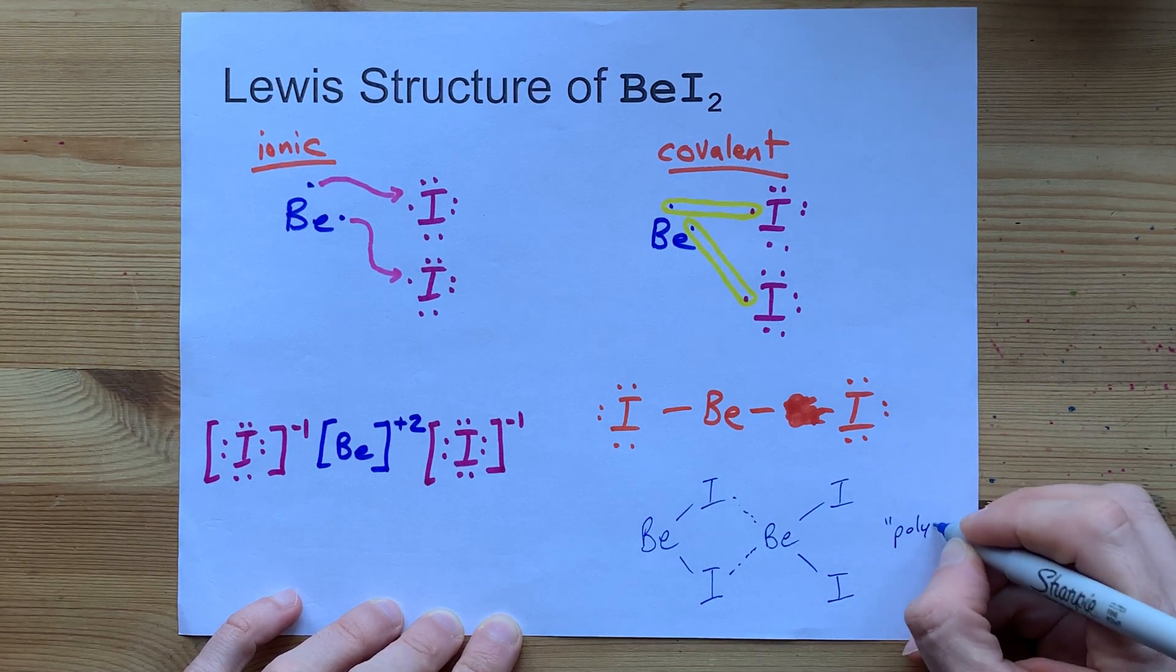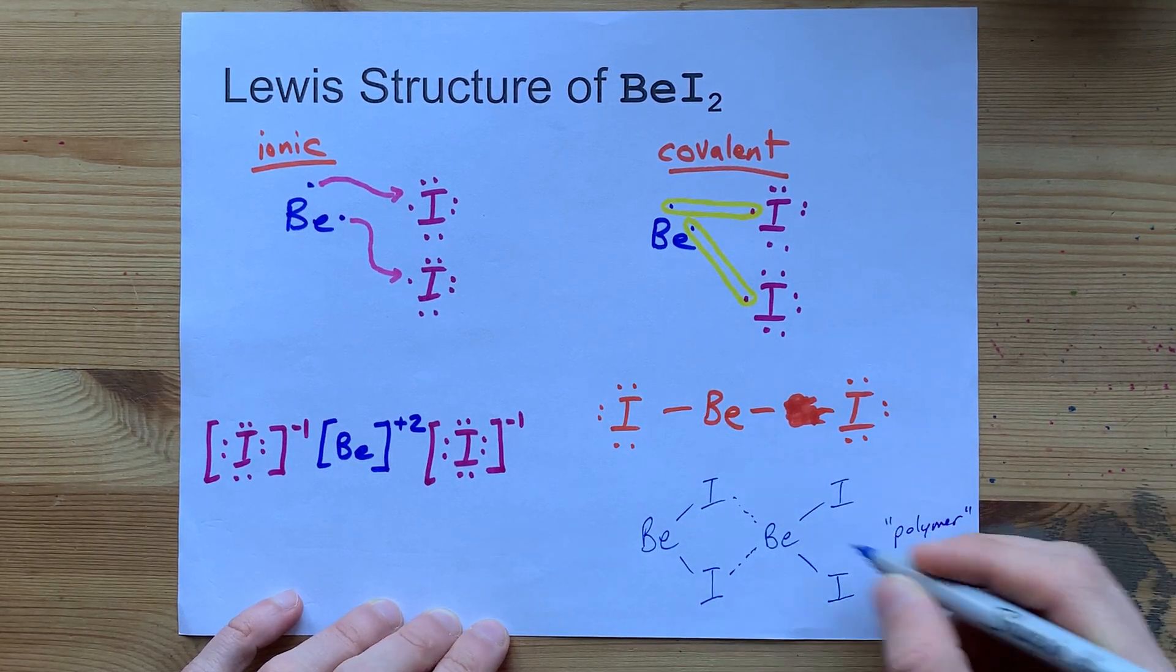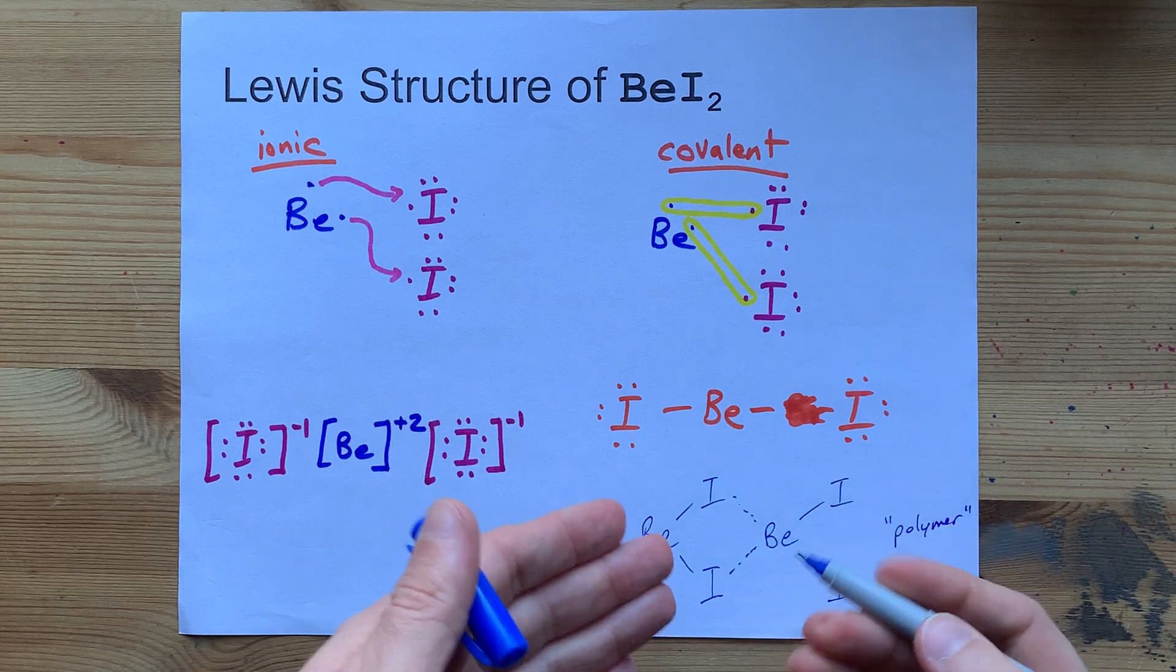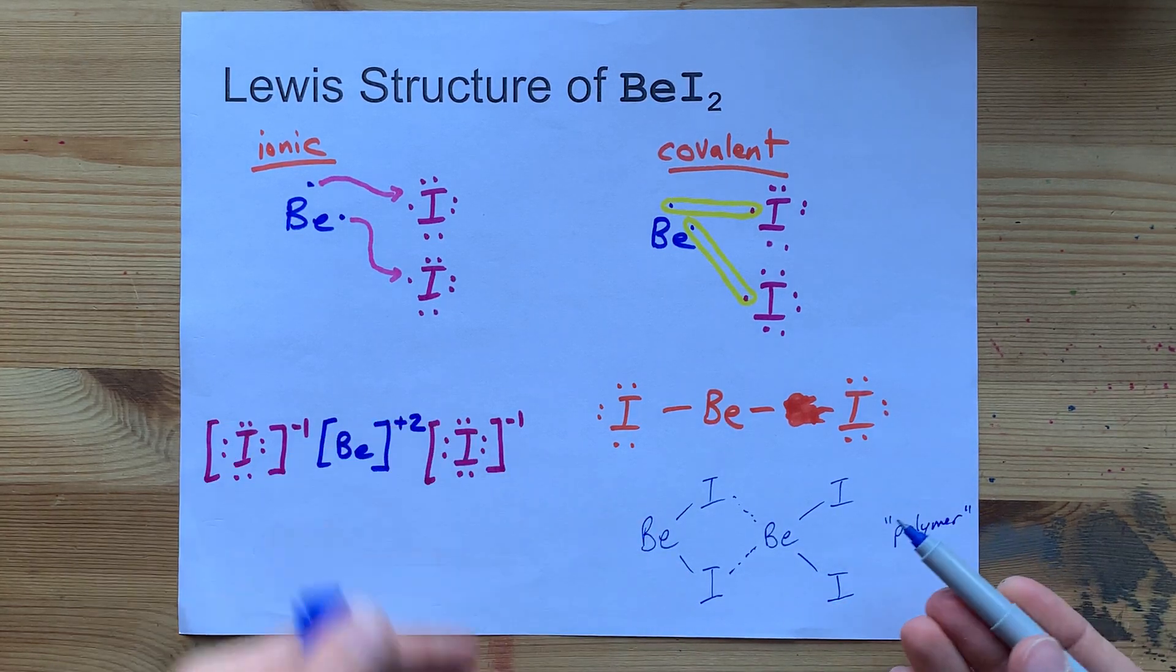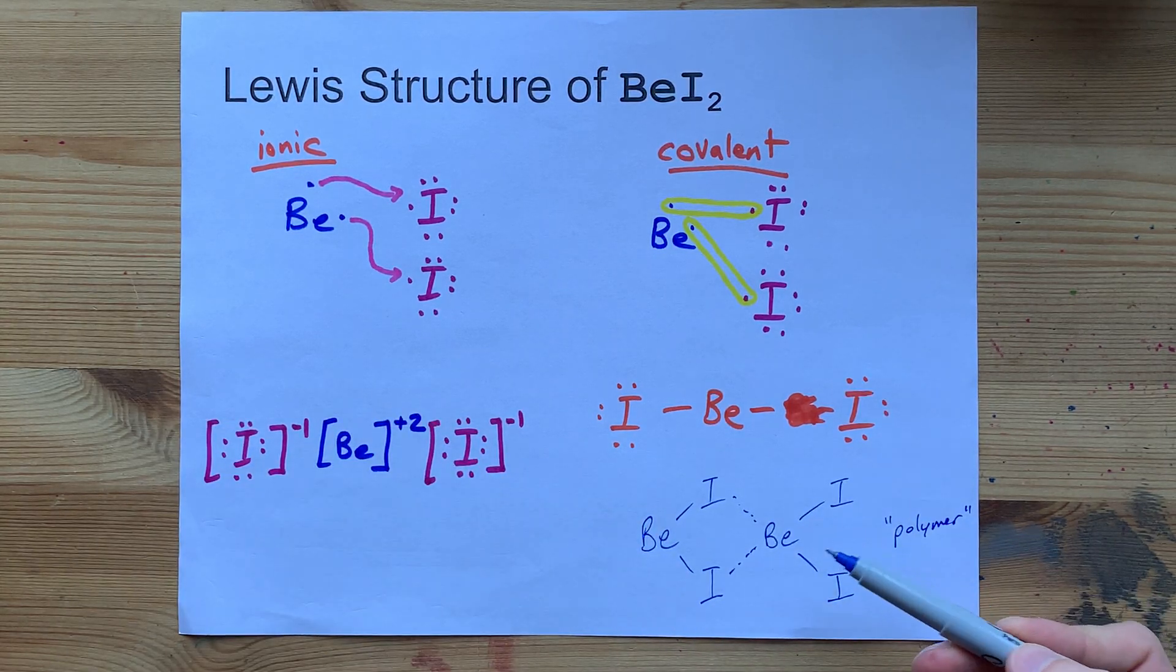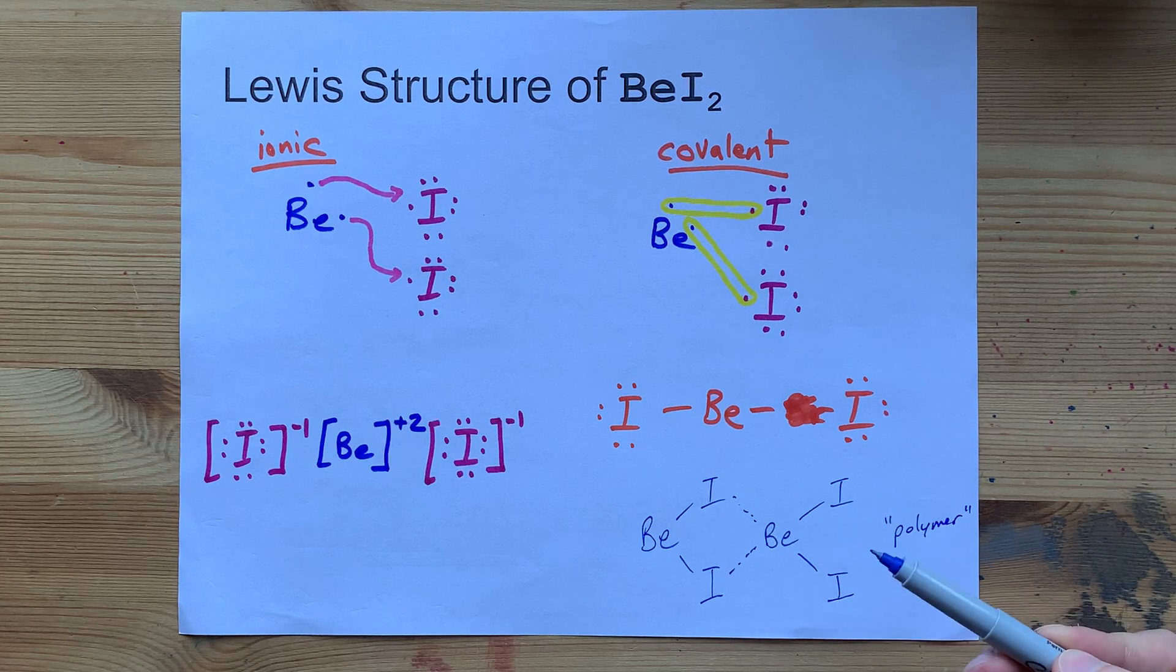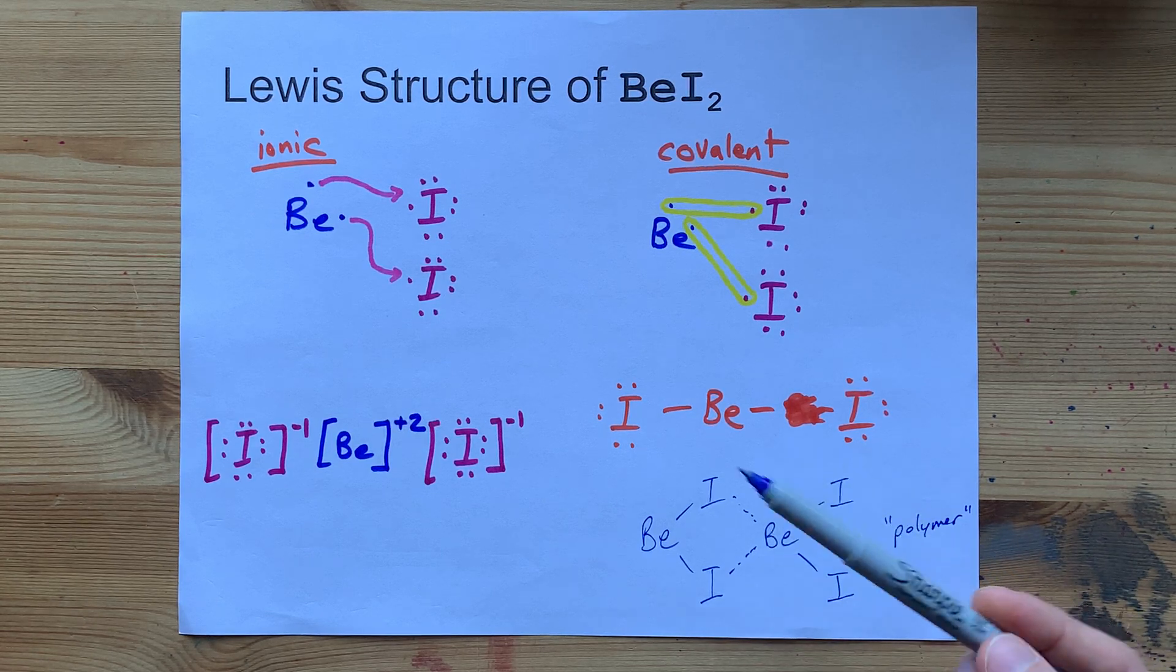I've seen it referred to as a polymer or a network covalent compound, similar to diamond or graphite, if you have any idea what I mean by network covalent solid. Anyways, the point is...